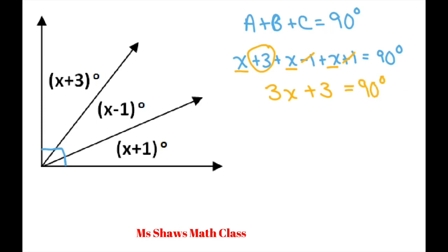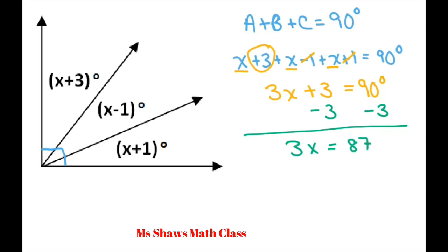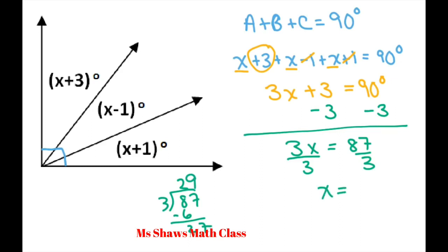These two cancel and we have just 3 left, so 3X plus 3 equals 90 degrees. Use your subtraction property — 3X equals 87 — then use your division property of equality and divide both sides by 3. Three goes into 87 to give 29, so X equals 29.